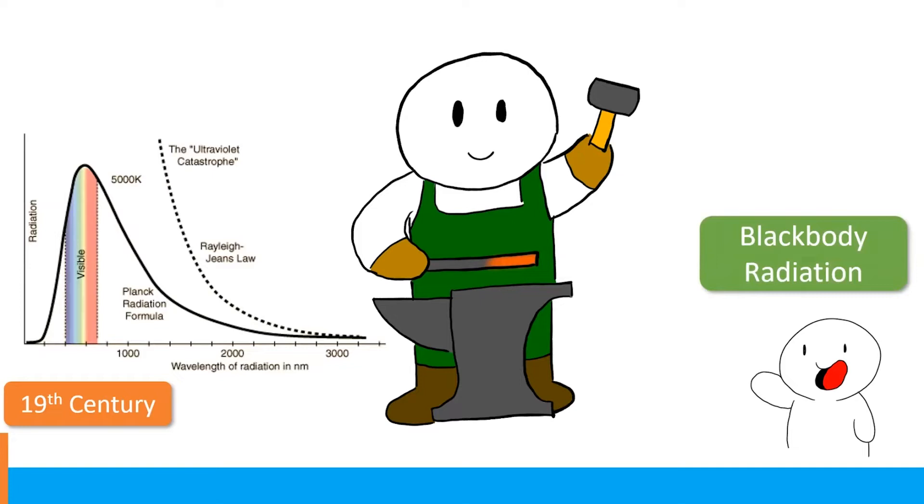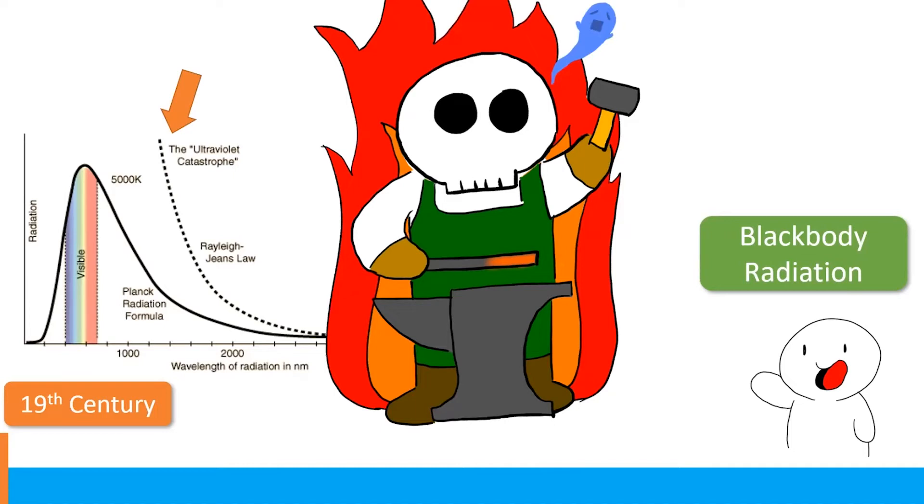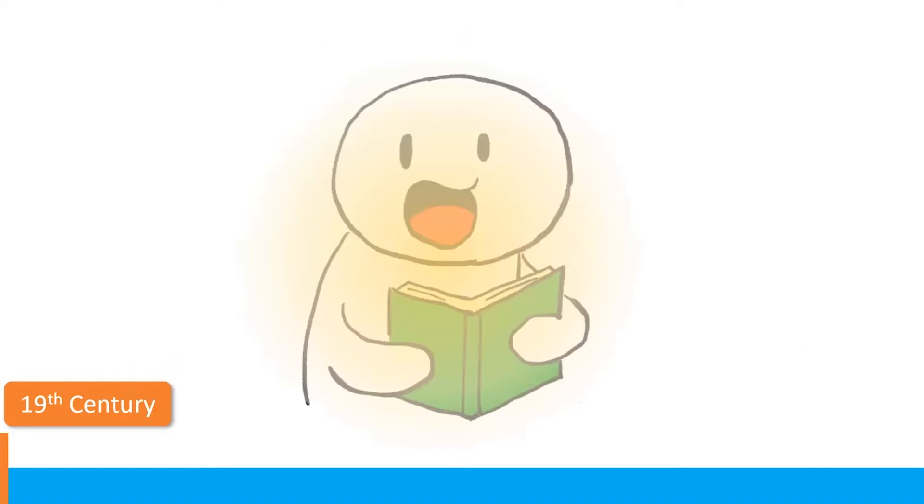This is nothing new at the time, and the spectrum of the glow is well detected in experiments. We know how it is supposed to look like. However, if we calculate the spectrum from classical physics, this is the curve that we get. And do you know what is the implication of this curve? It means that every blacksmith in the world will be fried to death. This is called the ultraviolet catastrophe. So this is the first problem that classical physics encountered.